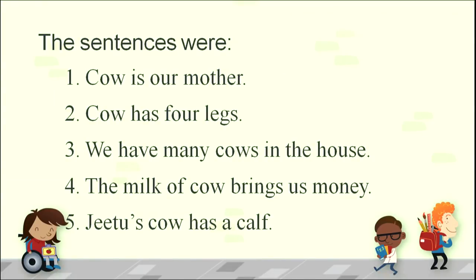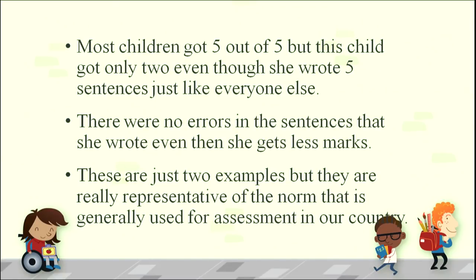The child wrote: 'Cow is our mother,' 'Cow has four legs,' 'We have many cows in the house,' 'The milk of cow brings us money,' 'Jitu's cow has a calf.' How beautiful — this child brought her own context into the classroom and did not blindly memorize the teacher's sentences. Most children got five out of five because they had memorized exactly what was given. But this particular child got only two marks, because she had written only two of the teacher's sentences; the rest came from her own context.